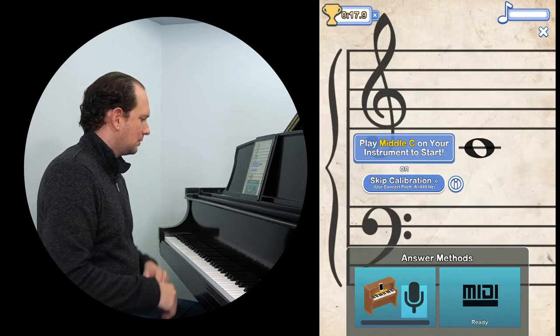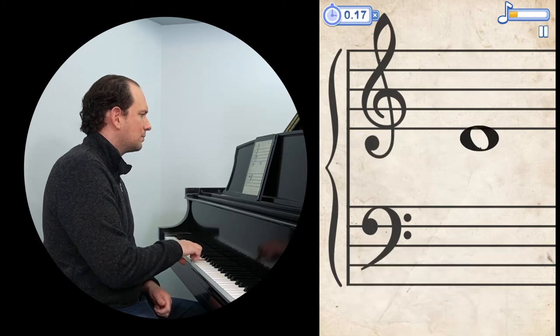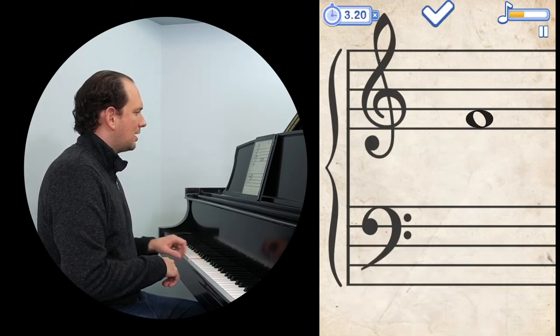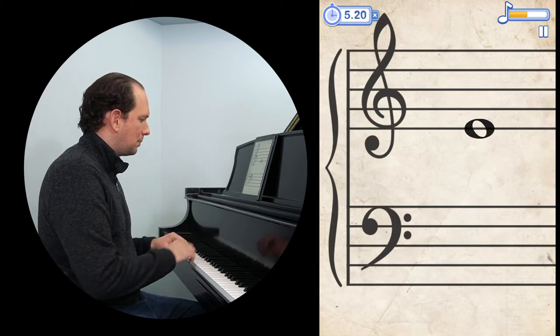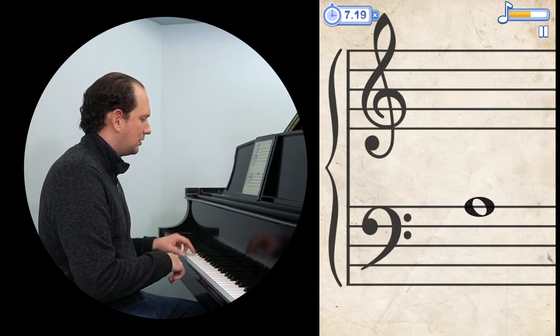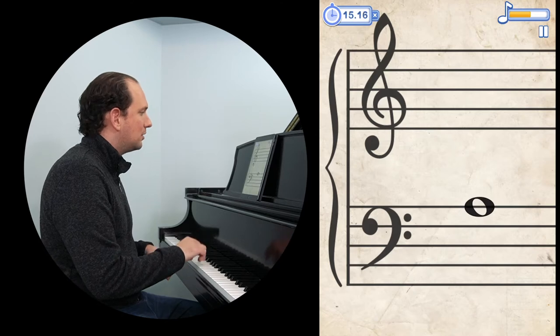Hit play, middle C. And notice it's keeping track of the time in the upper left corner. That'll determine my score. Now if I get one wrong, it adds five seconds.